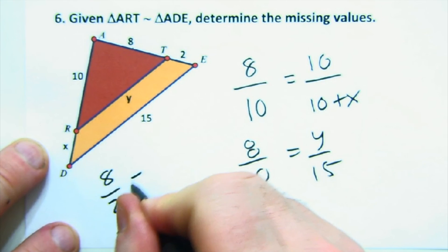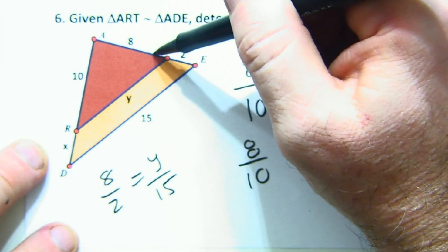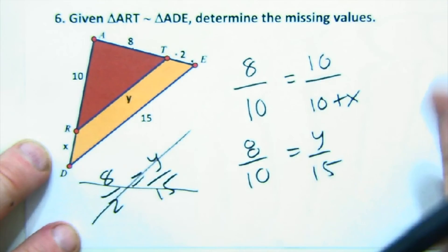Students say 8 is to 2 as y is to 15. Look at that. That's horrible. 8 is to 2 as y is to 15. Garbage. Be careful with that.